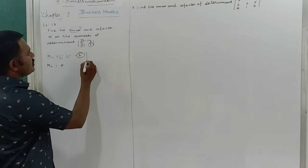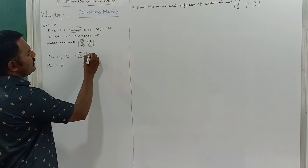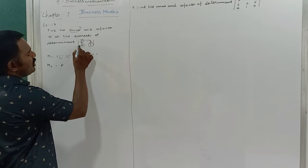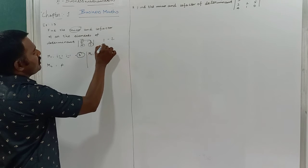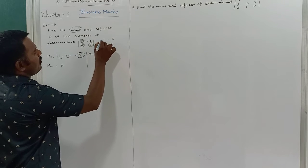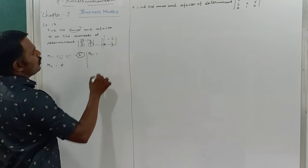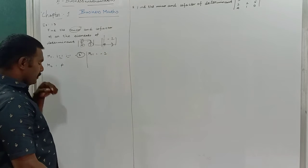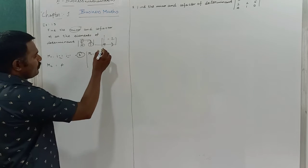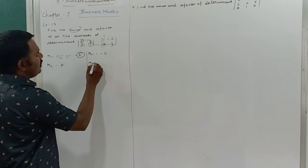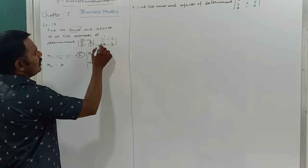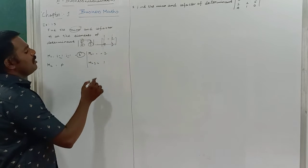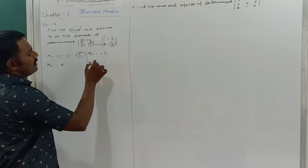Next, the minor of M21 — that is the second row, first column, element 4. I remove that row and column, leaving 1 and minus 2. So minus 2 is the minor of M21.